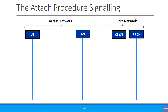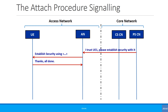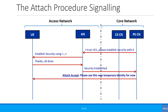Assuming that the authentication response was fine and successful, the PS core network will tell the access network: I trust this UE, it has authenticated itself, so please establish security procedures. The security procedures will be established between the access network and the UE, and once that's done, the access network will inform the core network that security has been established. The PS core will then send an attach accept message to the UE, which also includes a temporary identity.